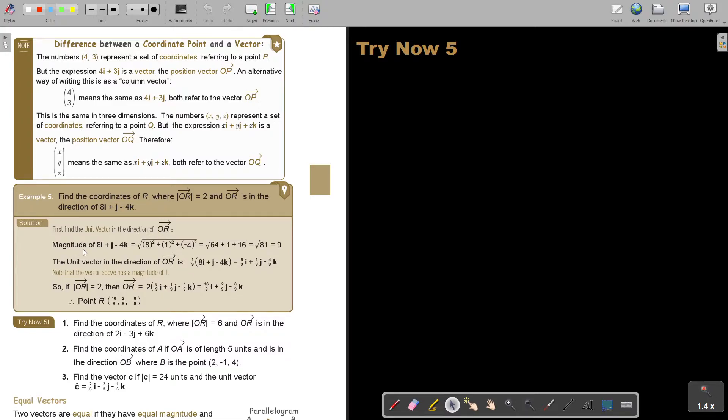So the magnitude of 8I plus J minus 4K. Let's first find the magnitude, and we get 9. Then the unit vector in this direction is 1 over 9.